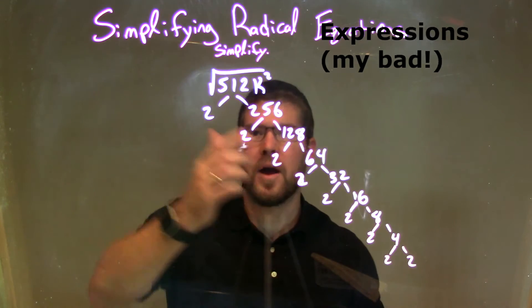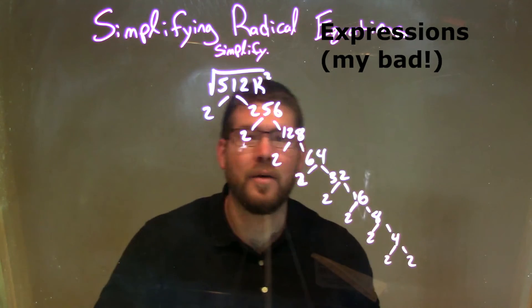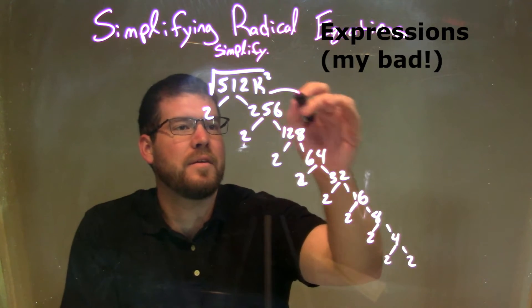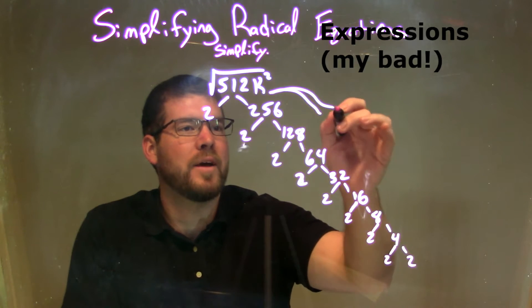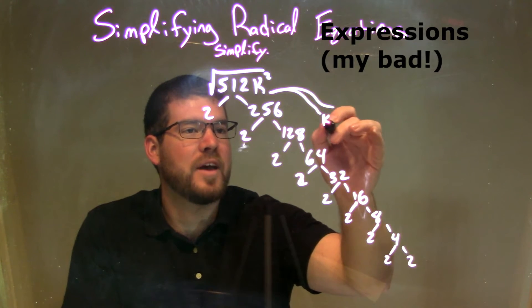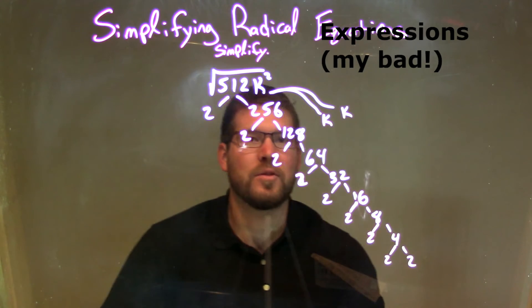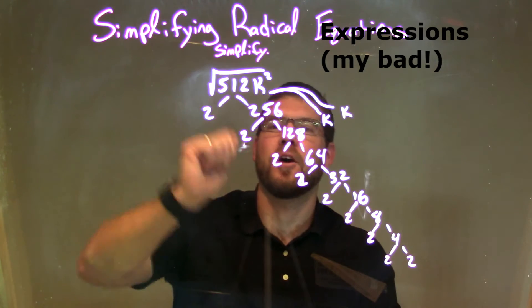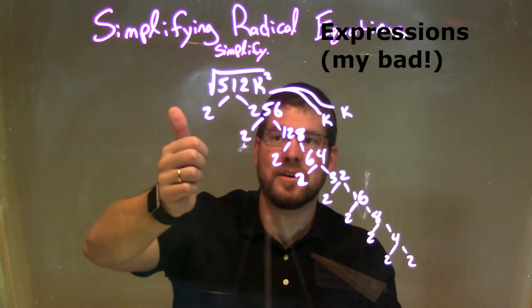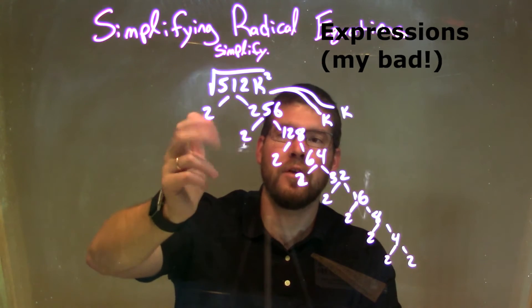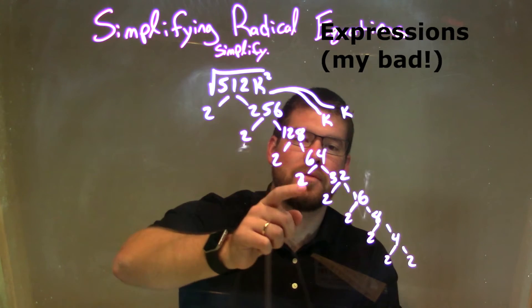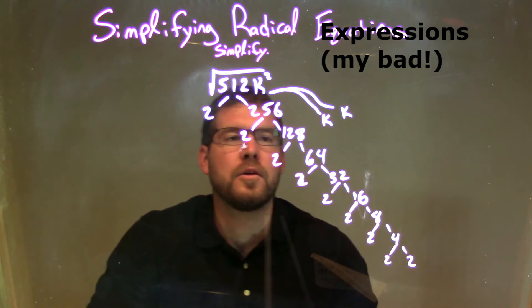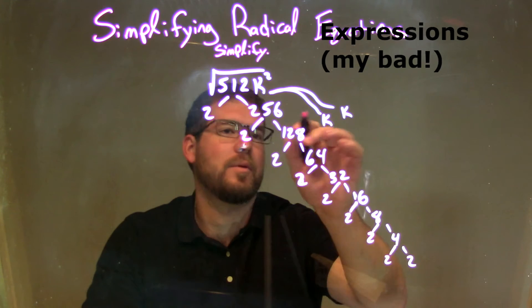So I broke it down into all the prime factors — the prime factorization of 512. And don't forget k squared is just k times k. So we have our prime factorization of 512, which became 2 times 2 times 2 times 2 times 2 times 2 times 2 times 2 times 2 times 2. And then k squared was k times k.